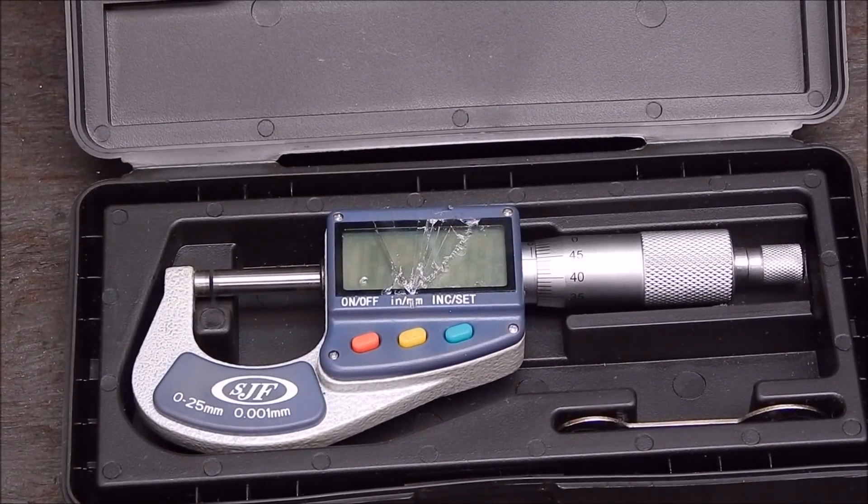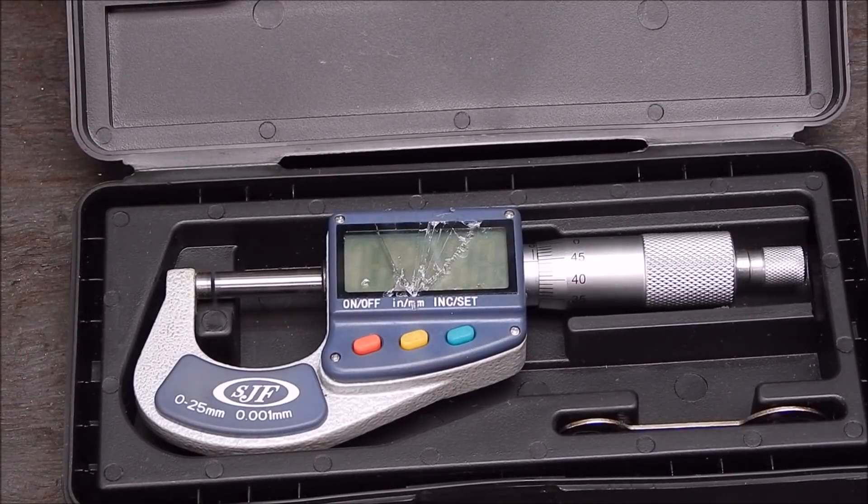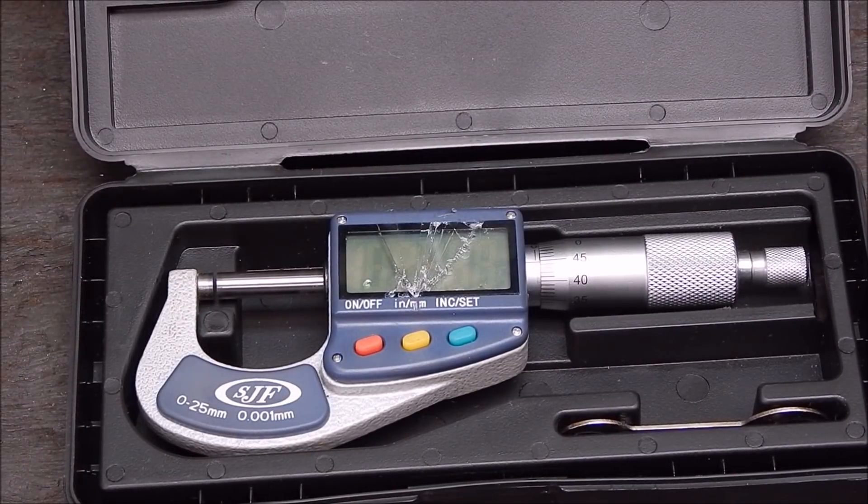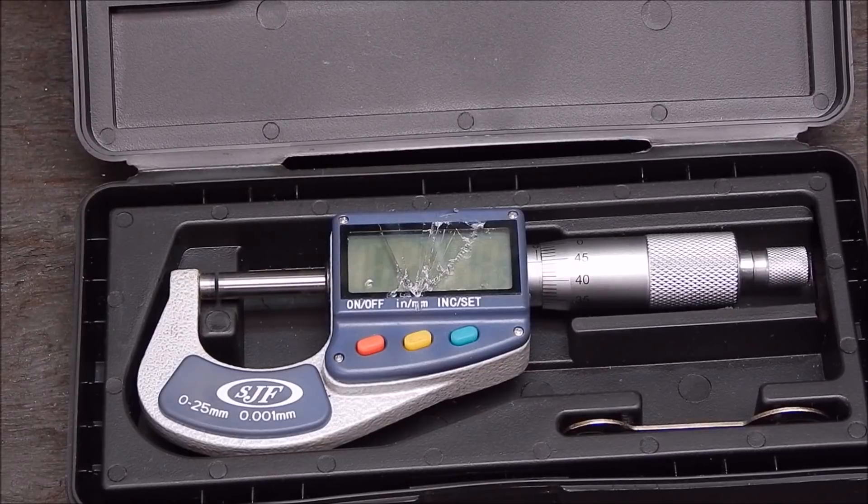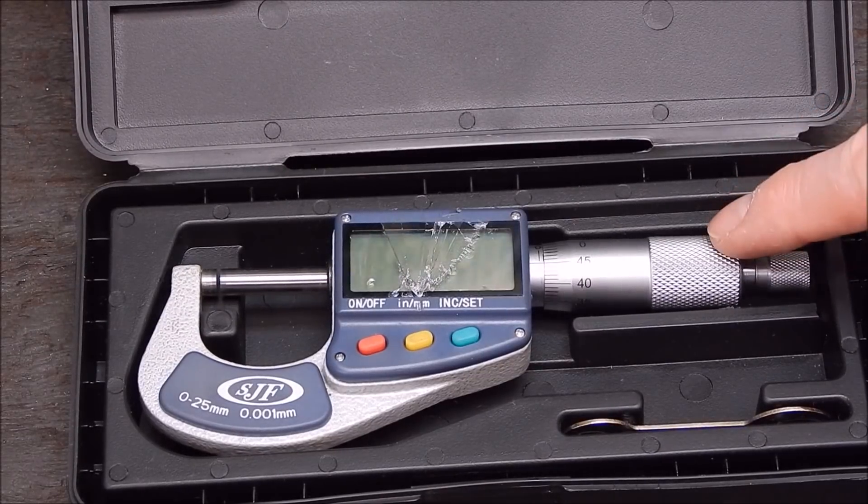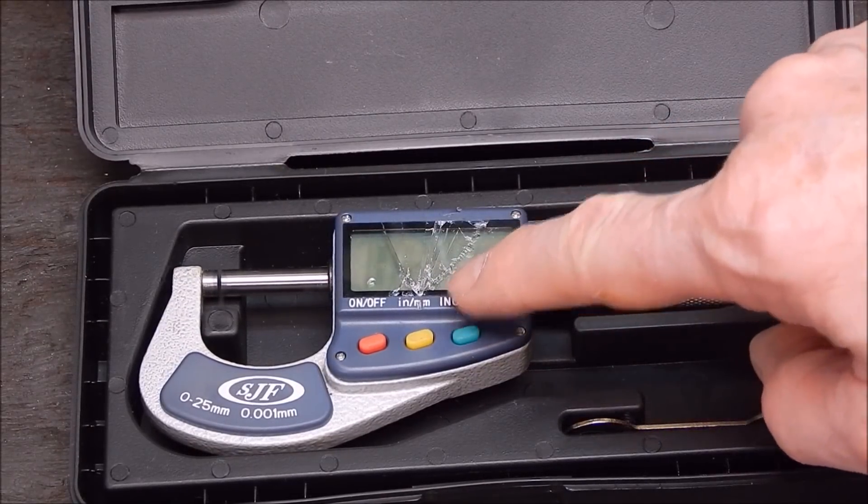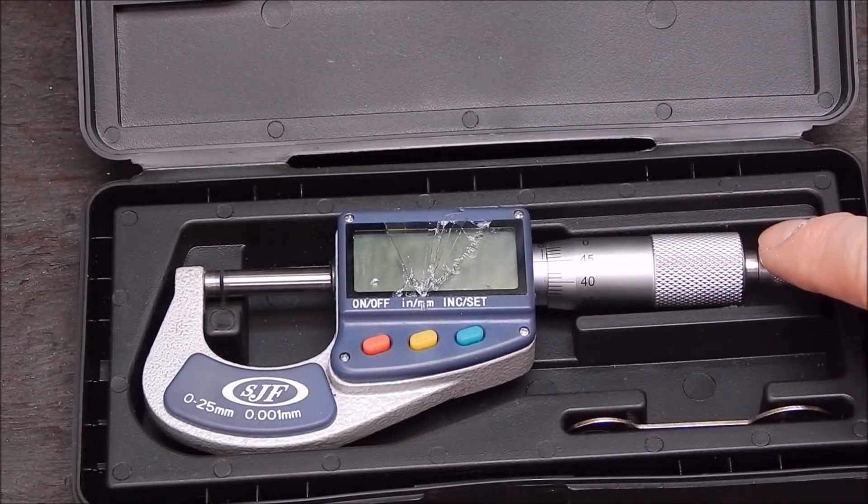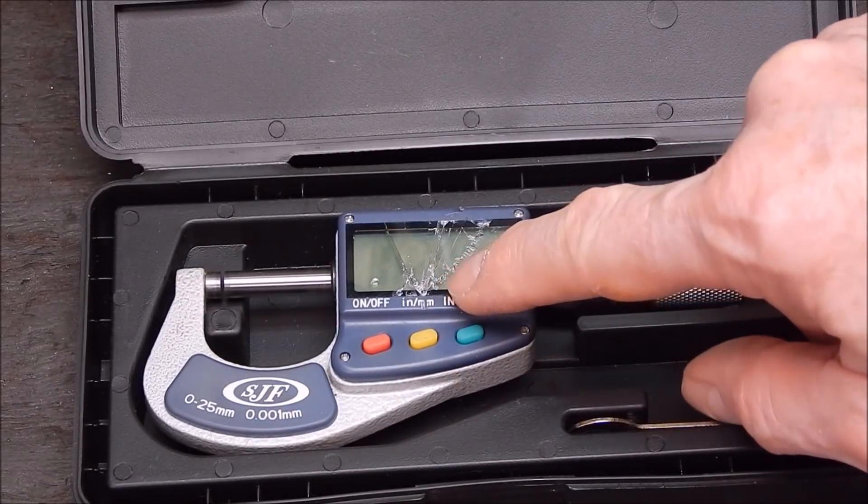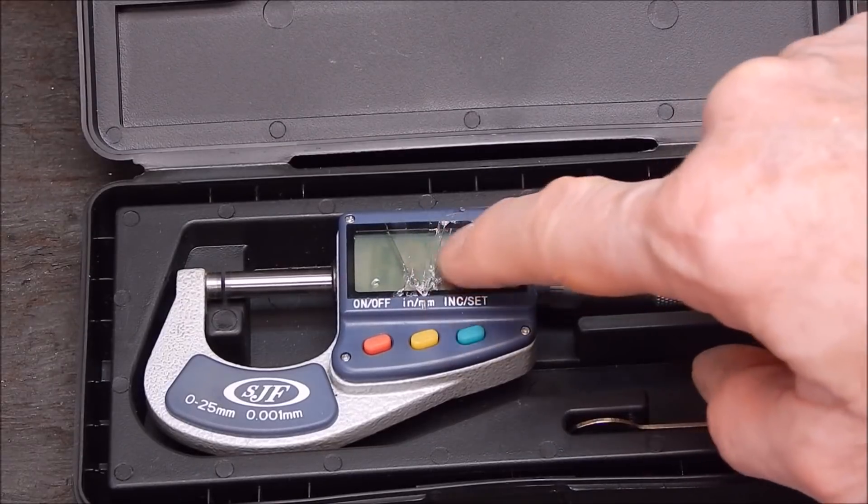The digital micrometer, the fantastic digital micrometer that I got from Banggood and been using ever since. It's just such a wonderful thing. Direct hit. I mean, it could have hit anywhere on the micrometer if it's going to hit it, but it had to hit 100% right on the screen. Smash that to bits.